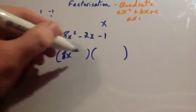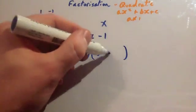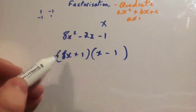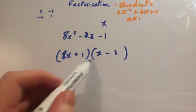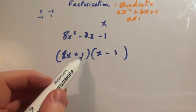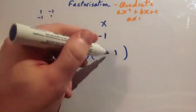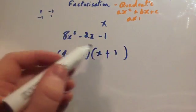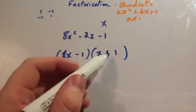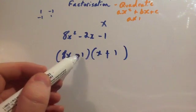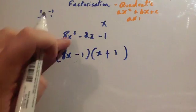Trying 8x and x with plus 1 and minus 1: 8x times x is 8x squared, 8x times minus 1 is minus 8x, plus 1x gives minus 7x — that's not going to work. If I swap to minus 1 and plus 1: 8x times x is 8x squared, 8x times 1 is plus 8x, minus x gives plus 7x. So that's plus 7x — again that wouldn't work. It can't be the 8x and x combination.